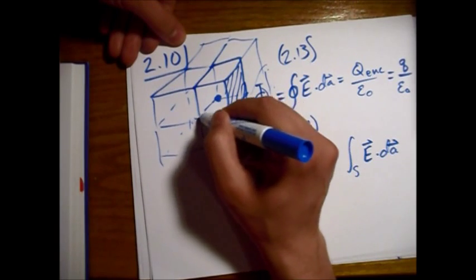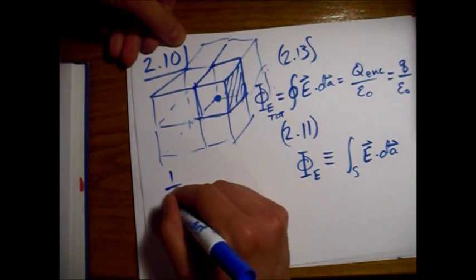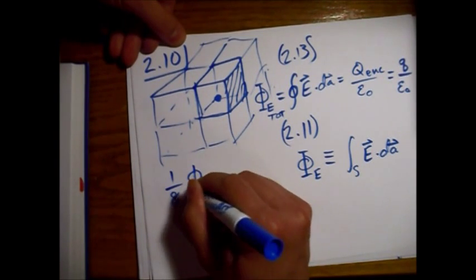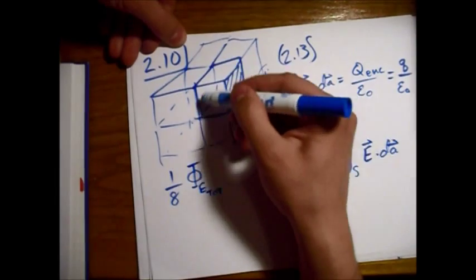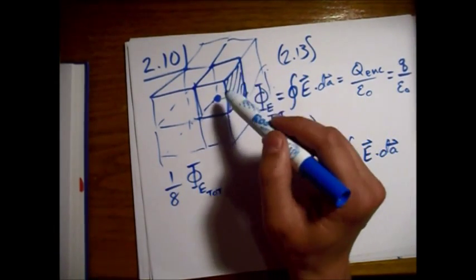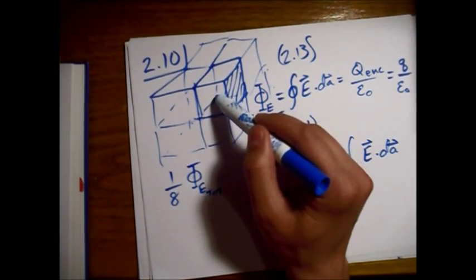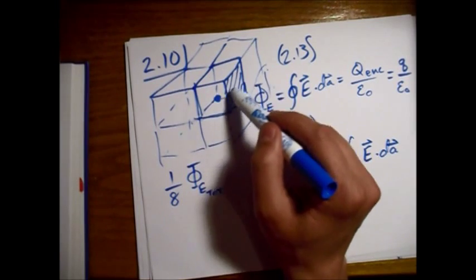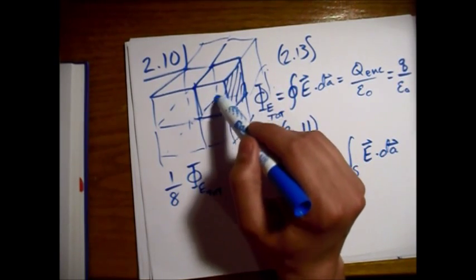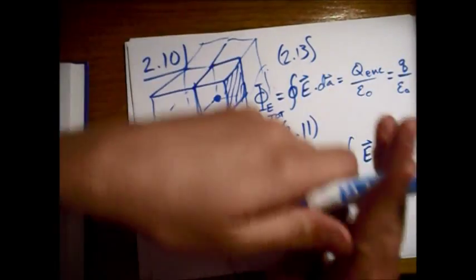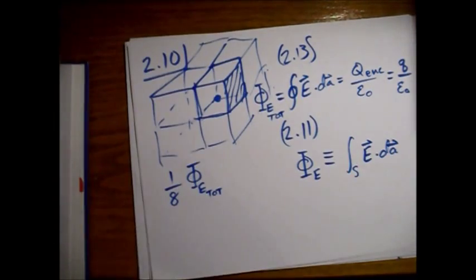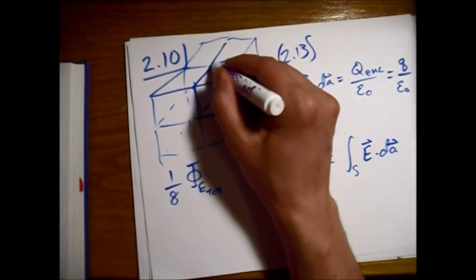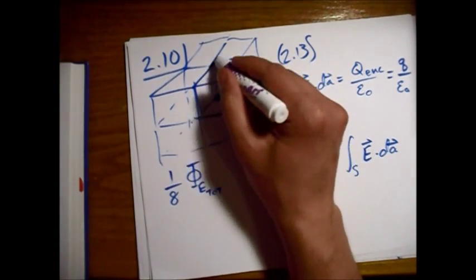That can surround this point perfectly symmetrically. So if we look at just the top, the original box, there's just one eighth of the total flux going through this box. And three of the faces won't have any electric field lines going through them because they are parallel to the field radially outward from this point.